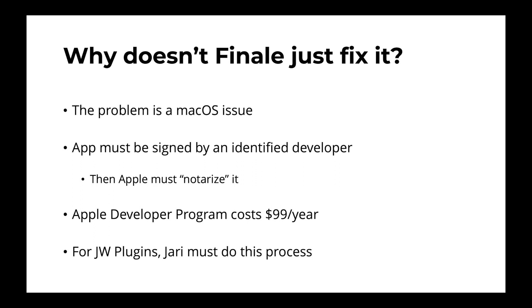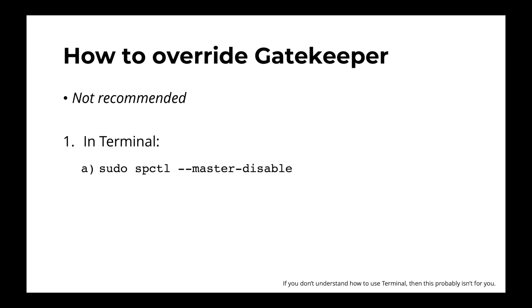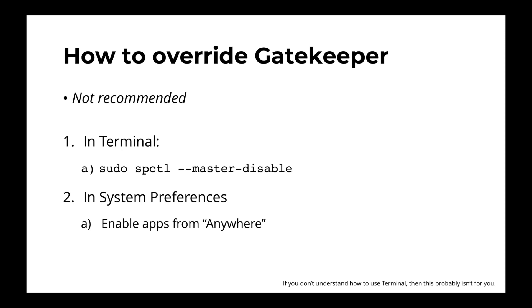There is one more way to fix this on your machine so you never have this problem again. I personally don't recommend it because it makes your computer more vulnerable to malicious applications, and if you don't understand Terminal, it's probably not a good idea. It is a two-step process: you type 'sudo spctl --master-disable' into Terminal. You will have to authenticate as you normally do with sudo. Then in your System Preferences, you'll now see the option for 'Anywhere' — just enable it. Again, I don't recommend this because it also allows any apps, not just JW plugins, including malicious ones. But if you decide to do it, it's your computer and you have every right to disable it.